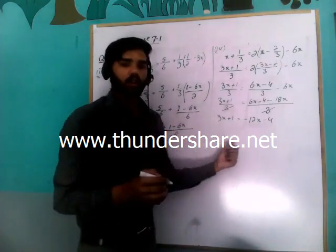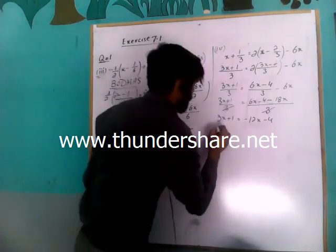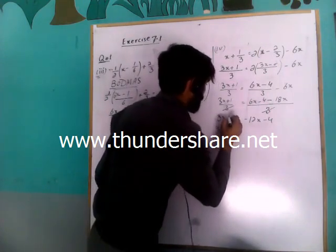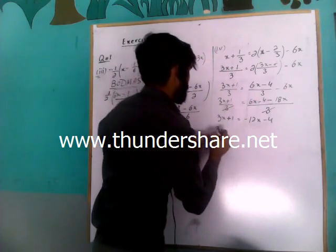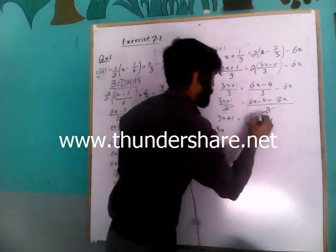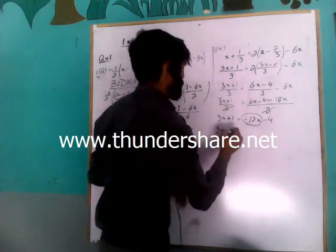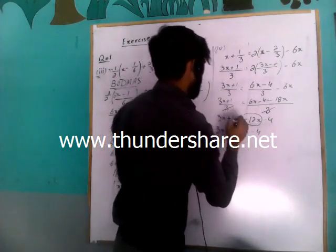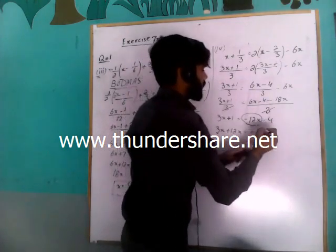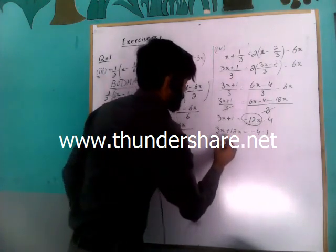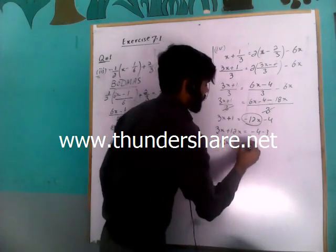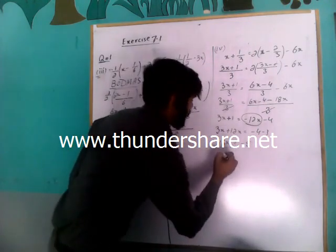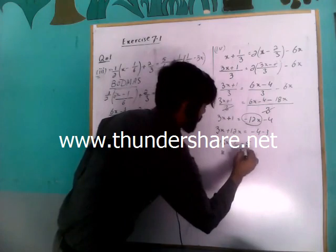Now we take the variable to one side and the constant to the other side. 3x, when taken to that side, becomes positive. 12x, when taken to that side, becomes positive. So 3x plus 12x gives 15x. Then minus 4 plus 1, when taken to that side, becomes negative, so 15x is equal to minus 5. Dividing both sides by 15, x is equal to minus 5 over 15.